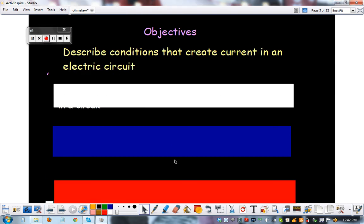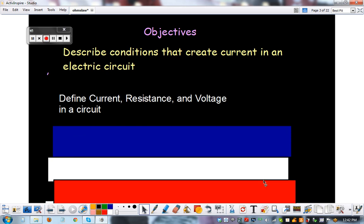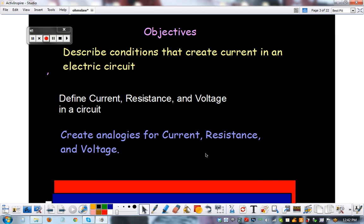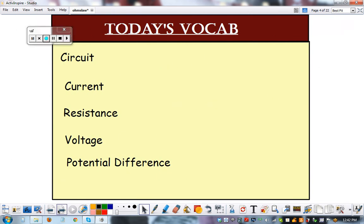In this video, we're going to be going over the circuit vocabulary, and we'll describe conditions that create current and electric circuit, which is the battery lesson that you watched. Define these vocab words, and your assignment is going to be to create analogies for those vocab words, so let's get to it.